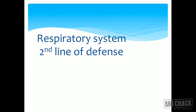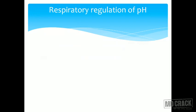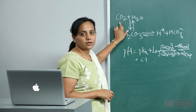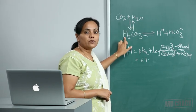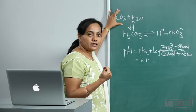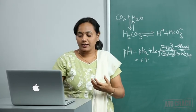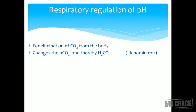The second line of defense is the respiratory system. How does the respiratory system help in maintaining acid-base balance? The main action is to eliminate carbon dioxide out from the body. Carbon dioxide can combine with water to form carbonic acid, so it is an acid — thereby we are eliminating the volatile acid from the body. When carbon dioxide is eliminated, the denominator is affected: CO2 forms carbonic acid (H2CO3), so it brings about changes in PCO2 and changes in the denominator.